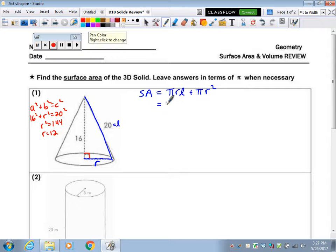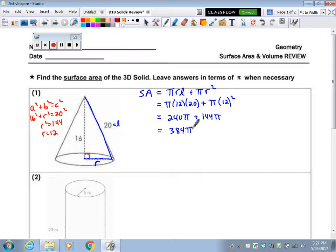So we have π times 12 times 20 plus π times 12 squared. 12 times 20 is 240, and 12 squared is 144. Now the directions say leave your answer in terms of π if necessary, meaning if there's a circle in the problem, you're going to end up with π. Units are inches squared for area. Okay, and you just leave it like that with the π in it.